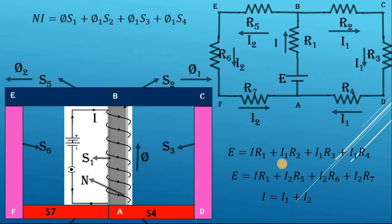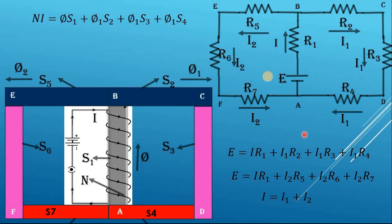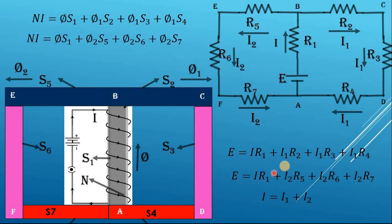Now we just replace the electrical quantities in these equations with magnetic quantities to get the magnetic circuit equations. E becomes MMF = NI; current I becomes flux φ; R1 becomes S1, R2 becomes S2, R3 becomes S3, R4 becomes S4, and so on for the second loop. In the electric circuit we have Kirchhoff's current law; in the magnetic circuit we have Kirchhoff's flux law, so the flux entering φ equals the flux leaving φ1 plus φ2.